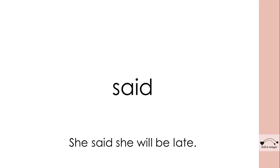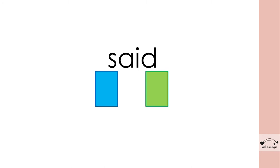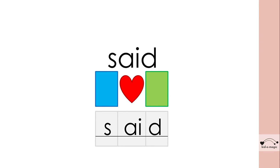Let's look at another example: 'said,' used in the sentence: She said she will be late. We break it up as S, E, D. S and D have their normal sounds, but A-I has the sound of E. S, E, D — so the students have to only learn A-I as the tricky part.